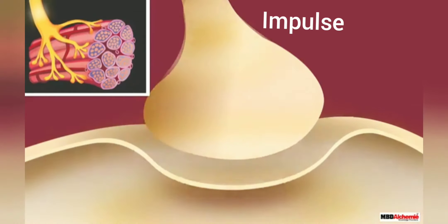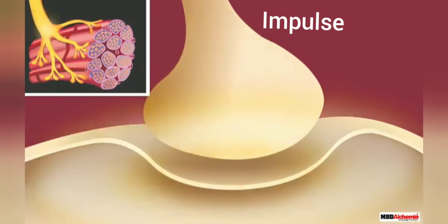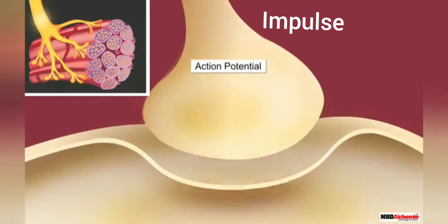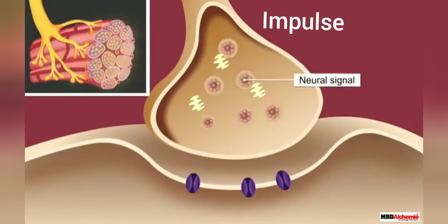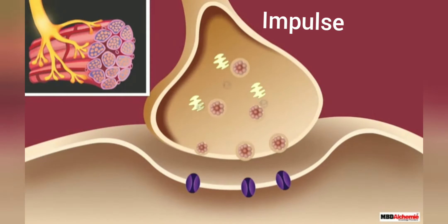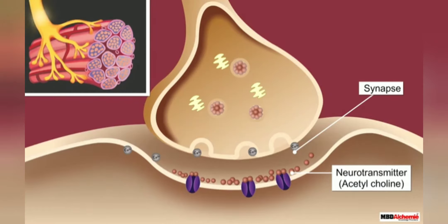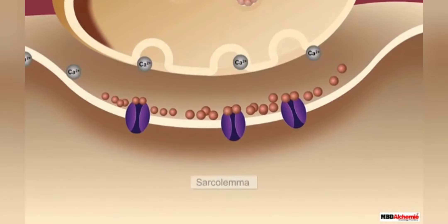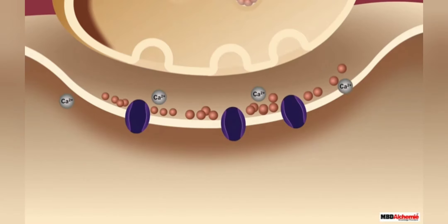But when an action potential comes — that means an impulse comes to the muscle through the motor end plate — it spreads throughout the sarcolemma of the myofibril. The transverse tubules or T-tubules of the sarcoplasmic reticulum release a large number of calcium ions into the sarcoplasm.